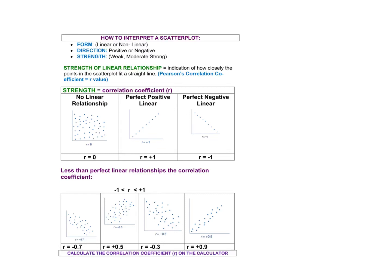The other day we started bivariate data and we looked at drawing up scatterplots. We've got our bivariate data where we were putting our response variable on the y-axis and our explanatory variable on the x-axis. We had an example — weight and height — and we ended up with a scatterplot which was all these dots representing how many data points you collected.